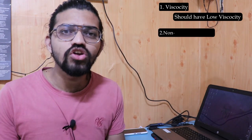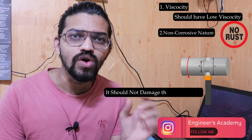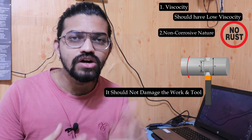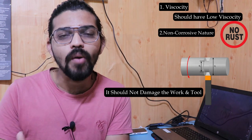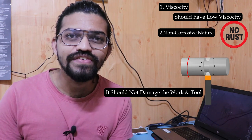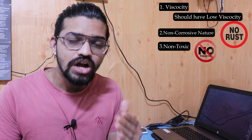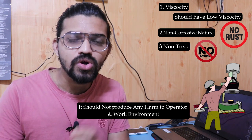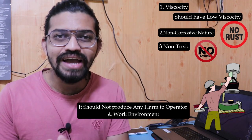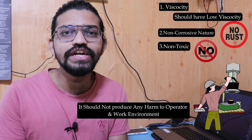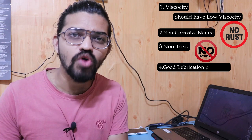The second property is non-corrosiveness. The cutting fluid should not damage the workpiece or the tool through corrosion, as corrosion reduces the life of both the tool and workpiece. Additionally, the cutting fluid should be non-toxic — it should not produce any harm to the person operating the machine or to the surrounding environment.